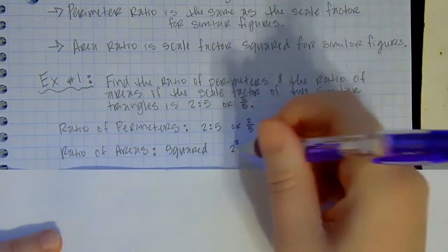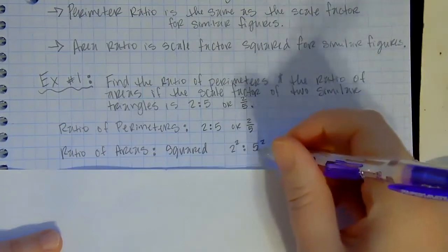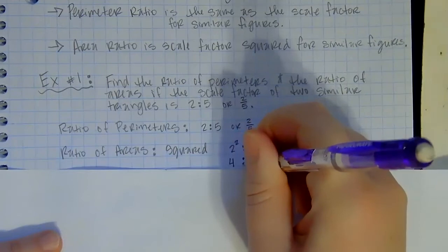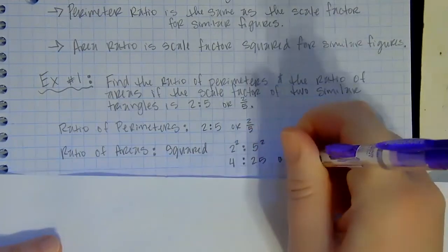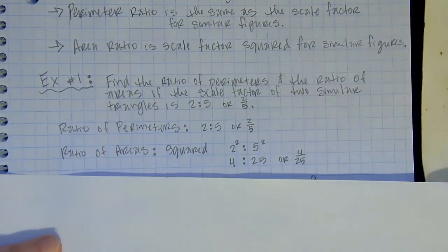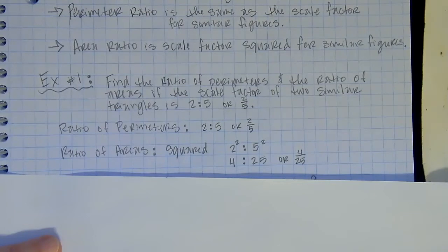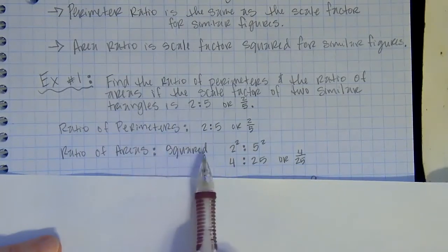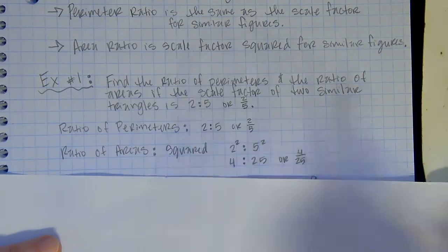So two squared is four, five squared is 25. So four to 25 or I could write it as four over 25. So that's the first type of example. Ratio of perimeters is always exactly the same as the scale factor, ratio of areas is always squared of the scale factor.